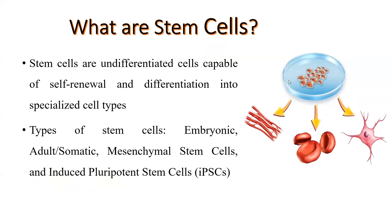There are types of stem cells: embryonic stem cells, adult stem cells, mesenchymal stem cells, and induced pluripotent stem cells. There are various other kinds as well, but mainly for study purposes, they are differentiated into two forms — embryonic and adult stem cells. Mesenchymal stem cells are a kind of subgroup.